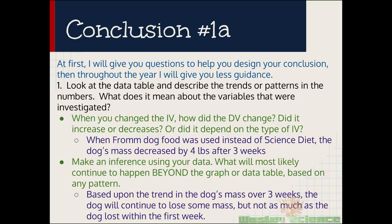So the first thing you need to do is look at the data table and describe the trends or patterns in the numbers. What does it mean about the variables that were investigated? So what that is saying is when you change the independent variable how did the dependent variable change? Did it go up? Did it go down? Did it stay the same? And our example here is when the Fromm gold dog food was used instead of science diet, the dog's mass decreased by 4 pounds after 3 weeks. So see how specific that is?